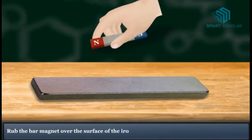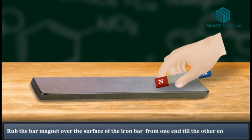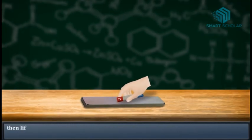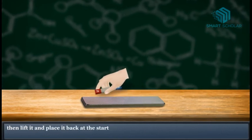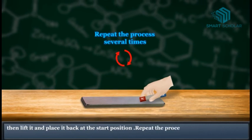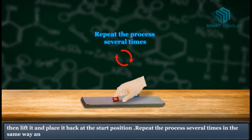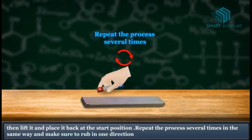Rub the bar magnet over the surface of the iron bar from one end till the other end. Then lift and place it back at the start position. Repeat the process several times in the same way and make sure to rub in one direction only.